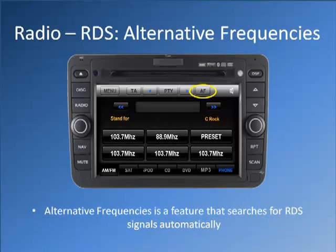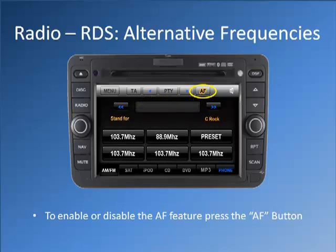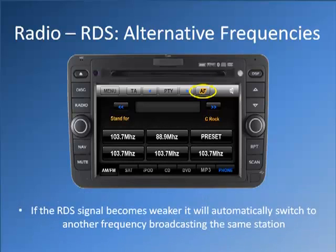Alternative frequencies is a feature that searches for RDS signals automatically. To enable or disable the AF feature, press the AF button. Once AF is enabled, SEEK will search for RDS signals automatically. If the RDS signal becomes weaker, it will automatically switch to another frequency broadcasting the same station.